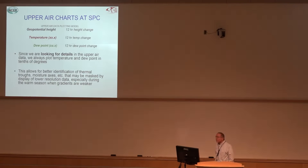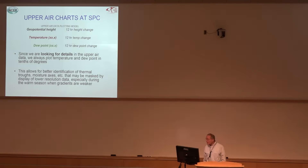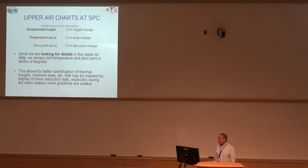Here's the general plotting model — height, temperature, dew point on the left, and then we look at 12-hour height change, 12-hour temperature change, 12-hour dew point change. Height change is important: from QG equations, if heights are falling, something's taking place — either warm or cold advection beneath the trough, thermal advection. Things are happening that influence vertical motion, and those height changes can be important. Temperature and dew point changes tell us: are we warming, are we moistening? What does that mean for stabilization or destabilization?